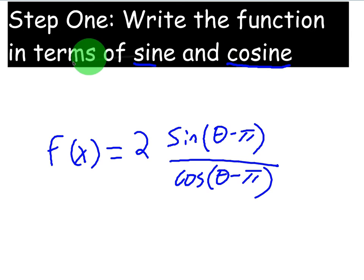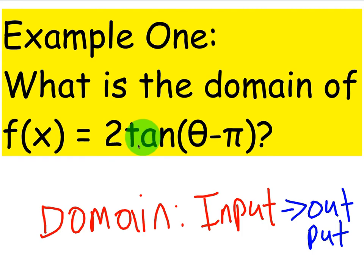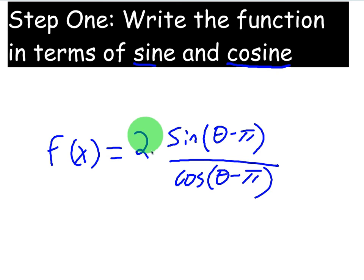Step one is going to be to write the function in terms of sine and cosine. Now, why is that? We know tangent is sine over cosine with the quotient identities. So therefore, instead of having two tangent of theta minus pi, it's going to become two sine of theta minus pi over cosine of theta minus pi. You keep what's on the inside the same. But the reason that we're writing it as a fraction is because now we have a denominator. And we know that you can't have zero in the denominator.